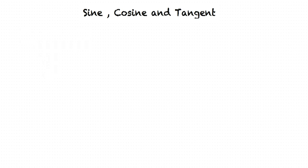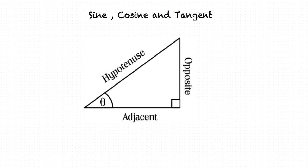Before we look at the formulas, let's first understand the opposite side, adjacent side, and the hypotenuse of a right-angled triangle. The opposite side is the side opposite to angle theta. The adjacent side is next to angle theta. The side opposite to the right angle is called the hypotenuse. It is important that you understand these terms perfectly.